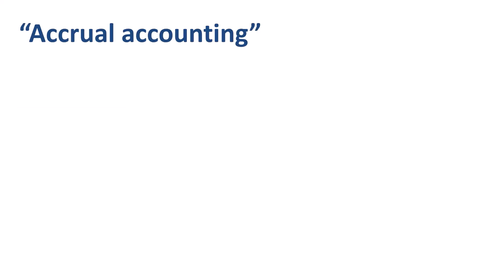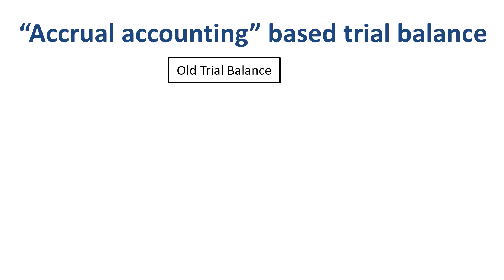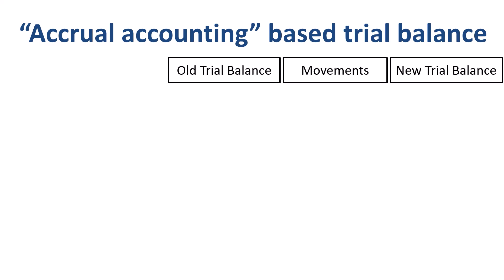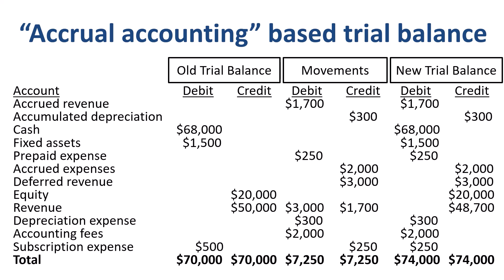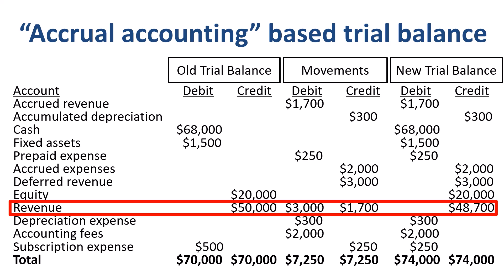Let's run another trial balance. The old cash accounting-based trial balance plus the movement from the adjusting entries provides a new trial balance on an accrual basis. Taking the revenue line as an example: we booked $50,000 credit as revenue from cash entries, then debited revenue by $3,000 for deferred revenue and credited revenue by $1,700 for accrued revenue. In total, the balance in revenue in the new accrual accounting-based trial balance is $48,700 credit.